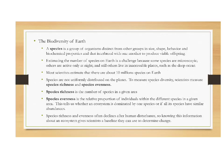Let's talk a little bit about biodiversity. A lot of this you should have had in biology — some of it's going to be new, but most of it's a rehash. A species is a group of organisms that are distinct from other organisms in size, shape, behavior, and biochemical properties, and these organisms can interbreed to produce viable offspring — meaning the offspring can themselves reproduce. A horse and a donkey can mate and produce a mule, but two mules cannot reproduce. Mules are sterile.